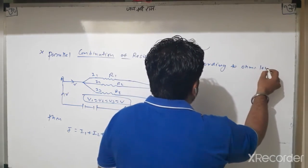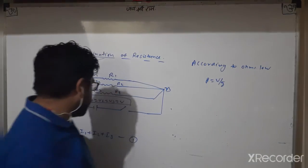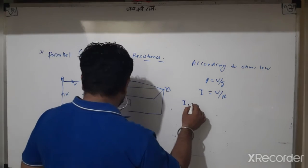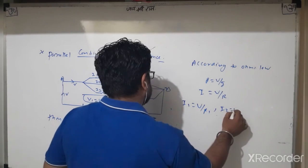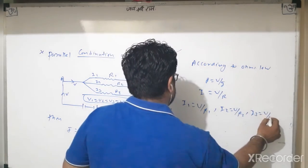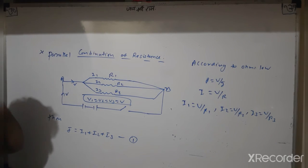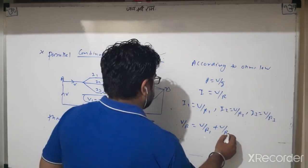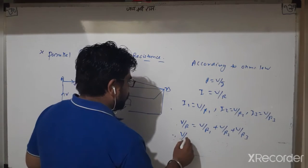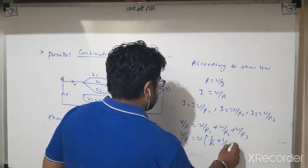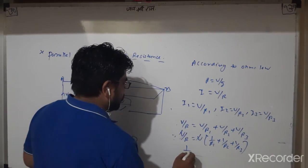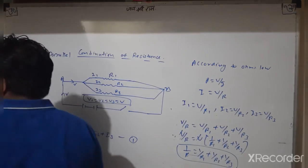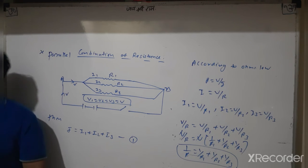According to Ohm's law, R = V/I, so I = V/R. From equation 1: I1 = V/R1, I2 = V/R2, and I3 = V/R3. Substituting into equation 1: V/R = V/R1 + V/R2 + V/R3. V is common and cancels, giving us 1/R = 1/R1 + 1/R2 + 1/R3. This is the formula for the parallel combination of resistance.